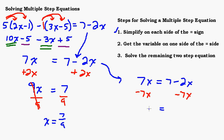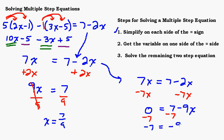Going the other way: subtracting 7x gives 0 on the left, so you'd have 7 minus 9x on the right side (negative 2 take away 7 is negative 9). Then subtracting 7 from both sides gives negative 7 equals negative 9x, and dividing by negative 9 — the negatives cancel — gives x equals 7 ninths. Same answer, just a little messier.